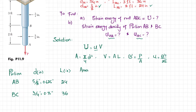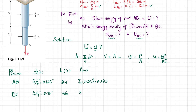Now calculating areas. The area of AB equals pi over 4 times 0.625 squared, which gives 0.3068 square inches. Similarly, the area of BC equals pi over 4 times 0.75 squared, which gives 0.4418 square inches.